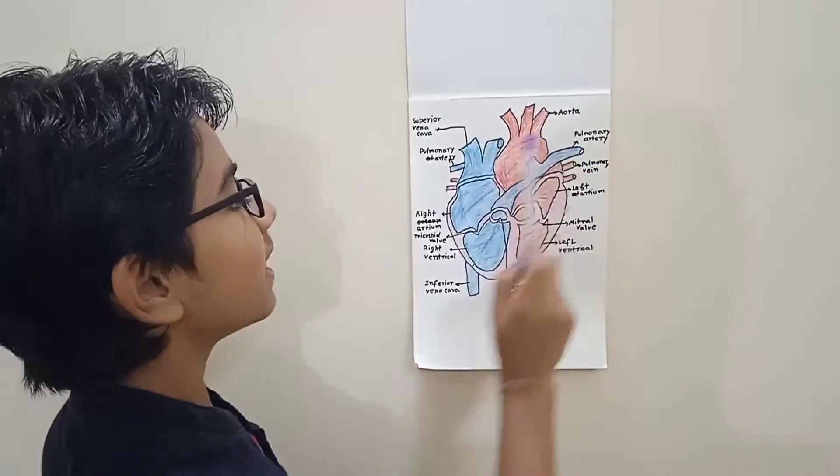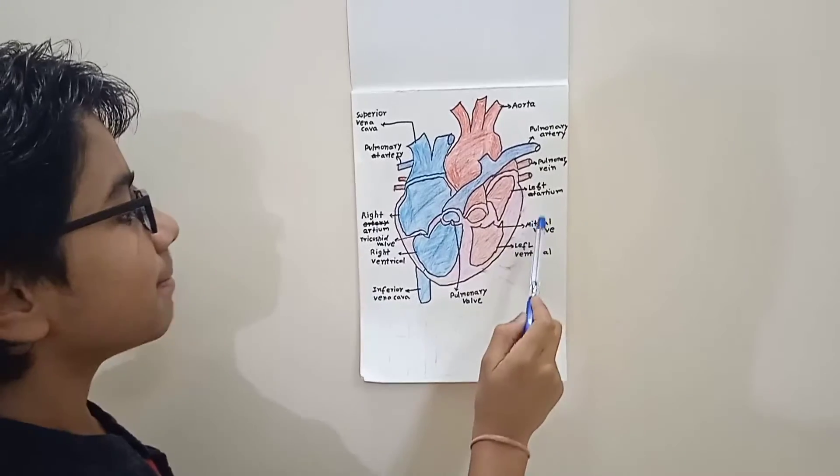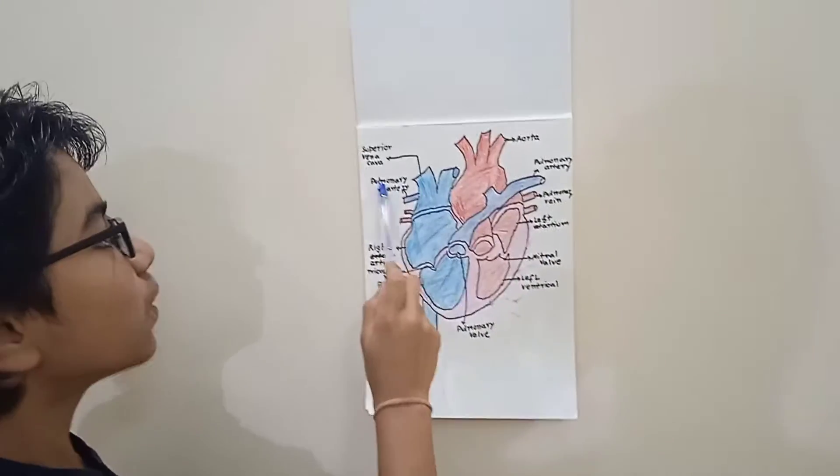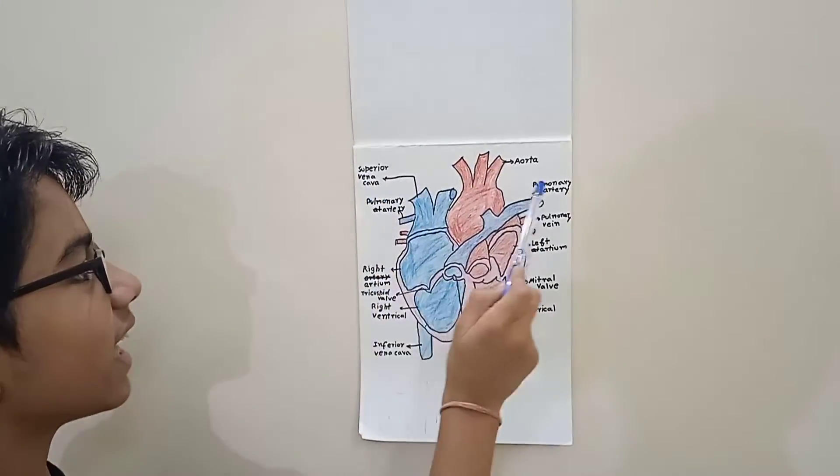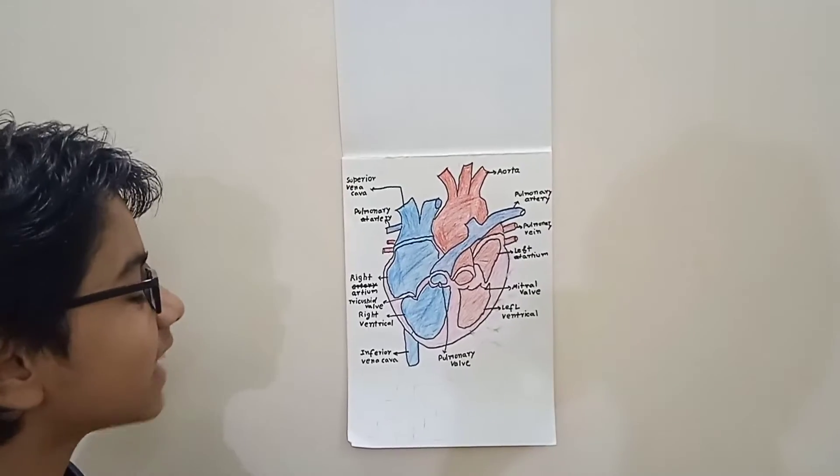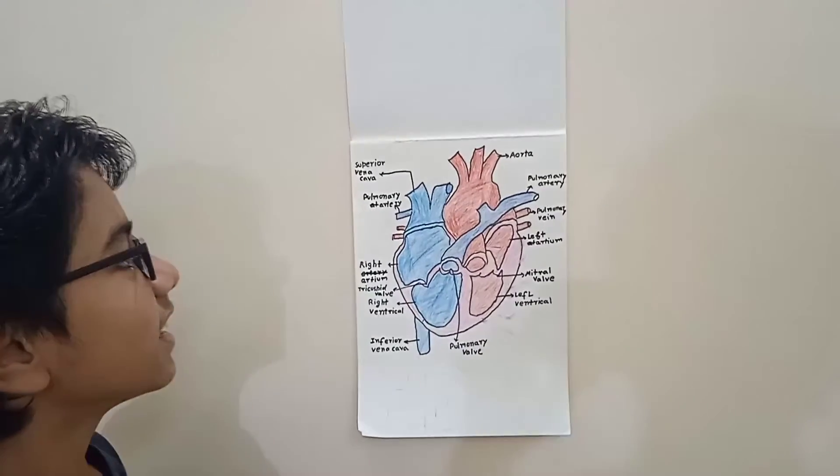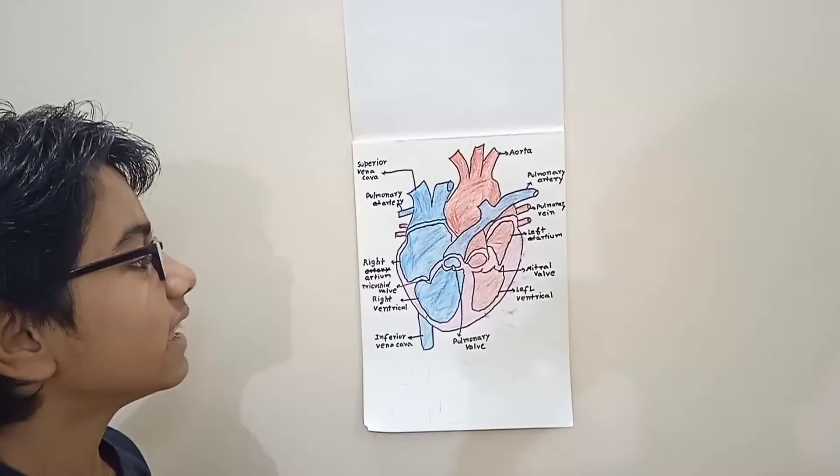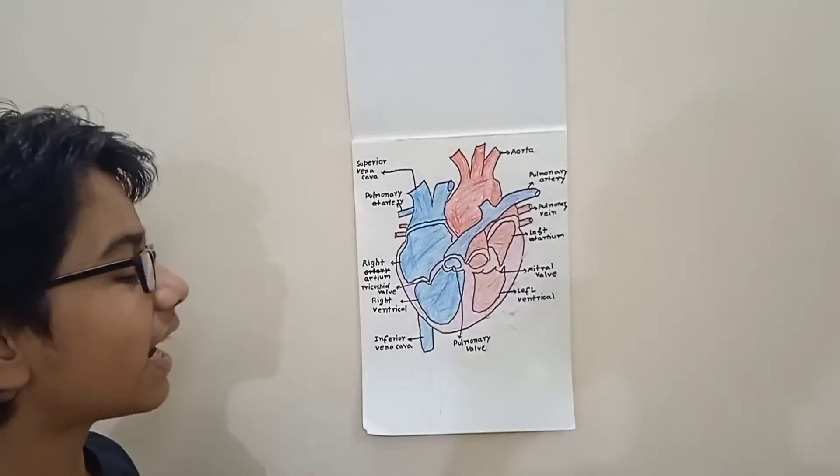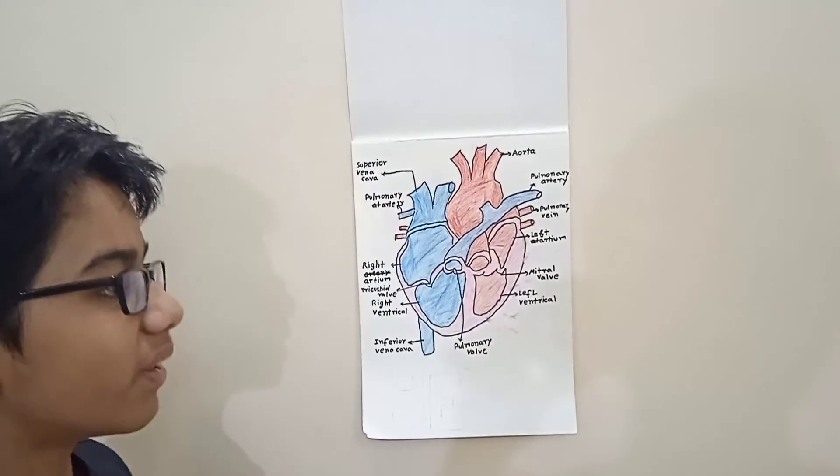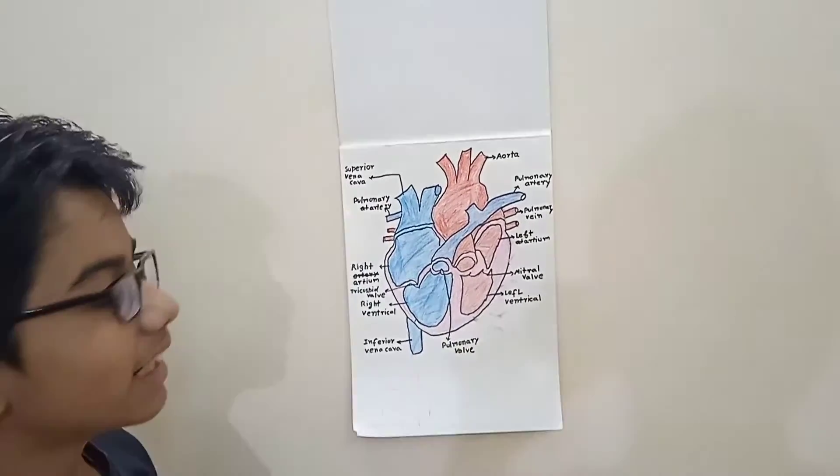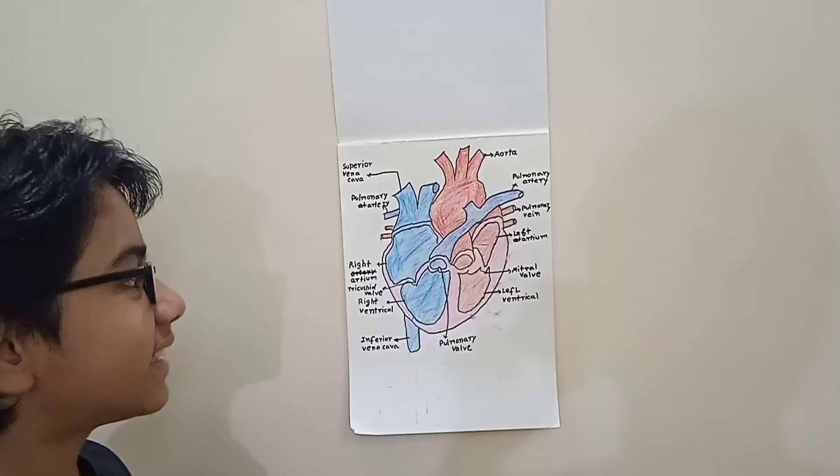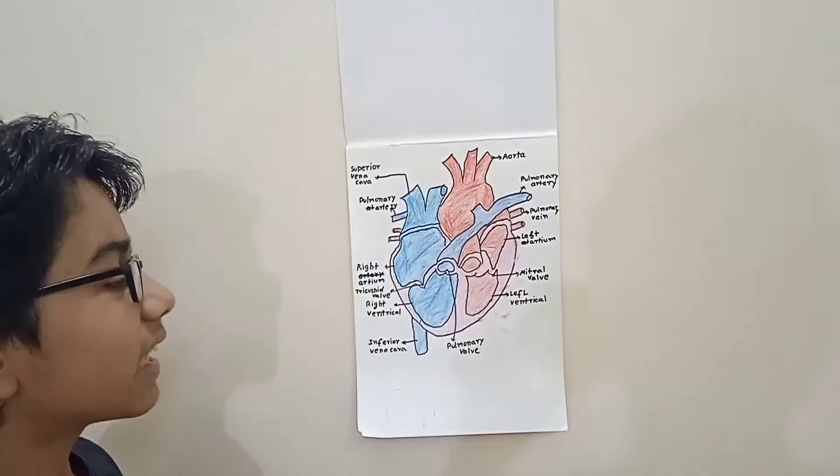So there are two pulmonary arteries, over here and over here. These are the main parts in the heart. Now we will see what are the main functions in the heart. The main function of a heart is to pump blood to the whole parts of our body. Now we will see how the circulation of blood occurs.